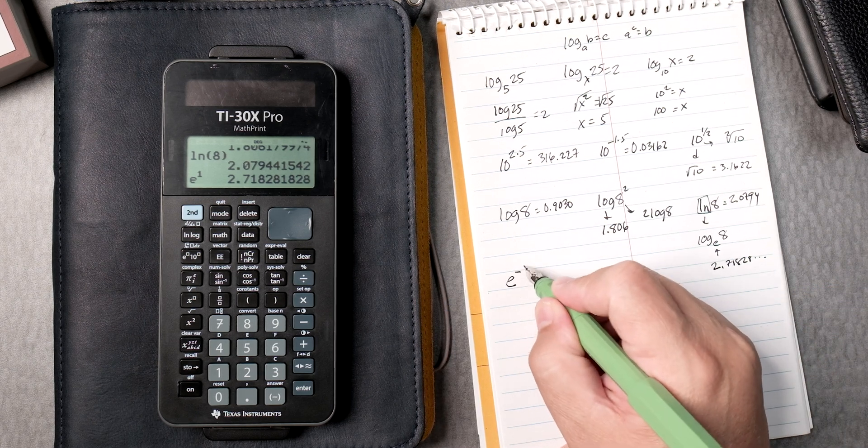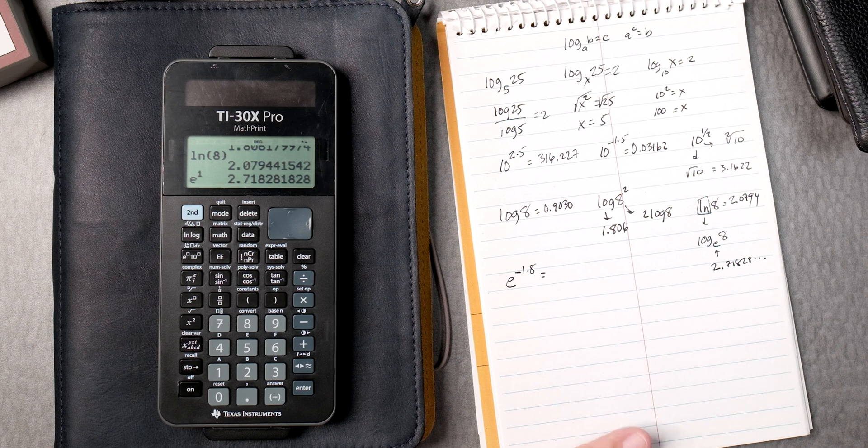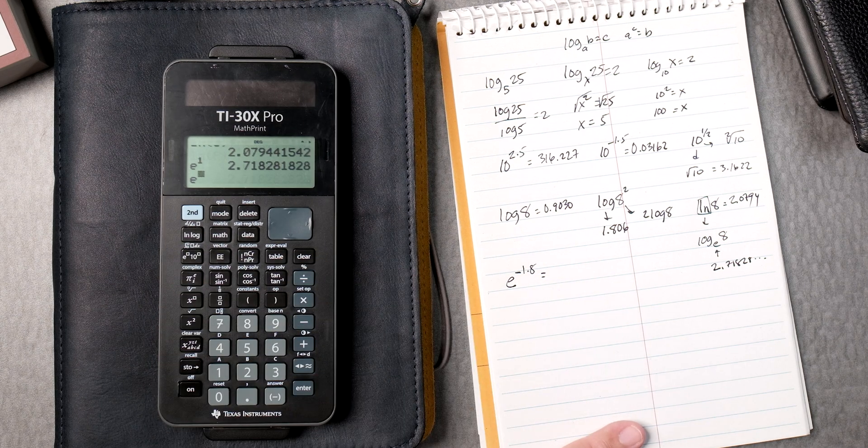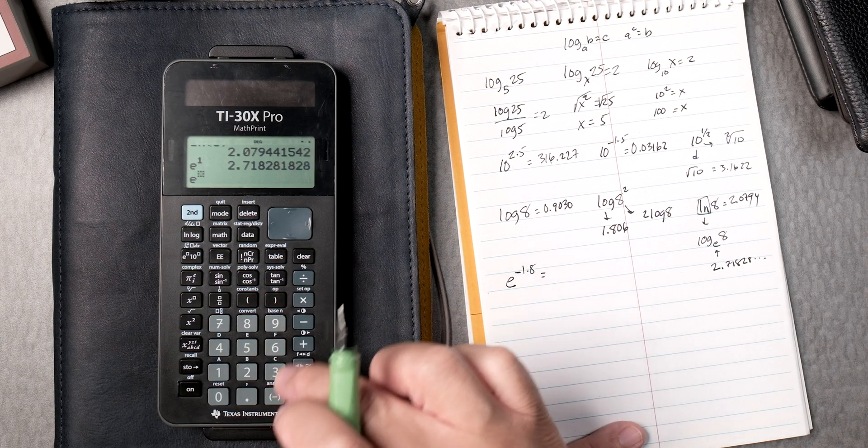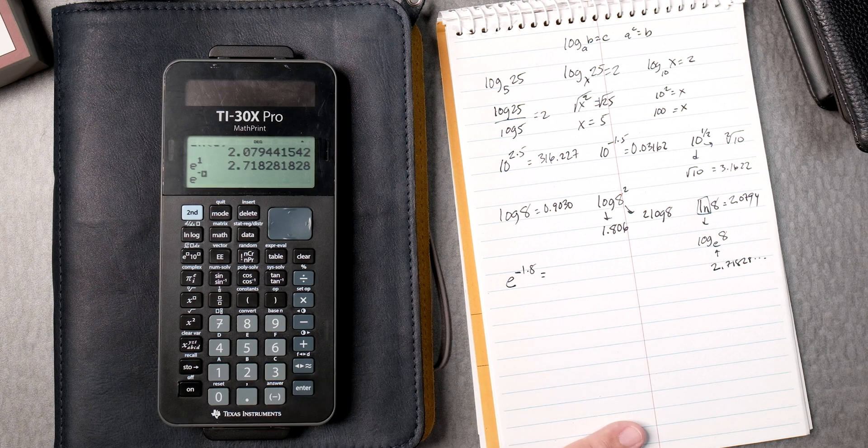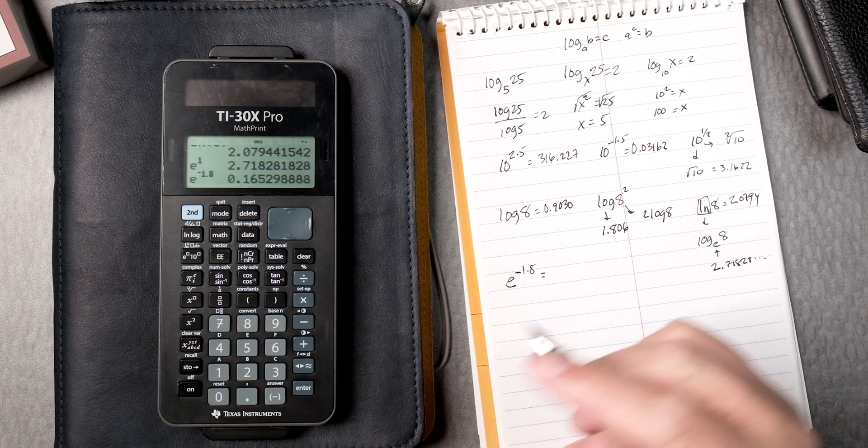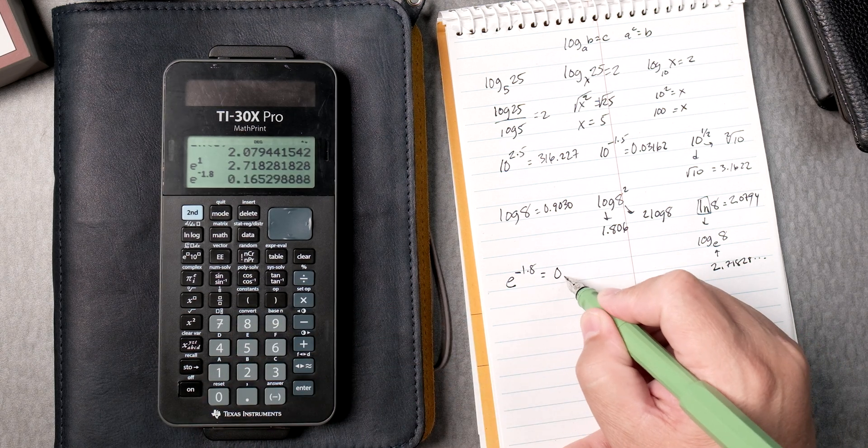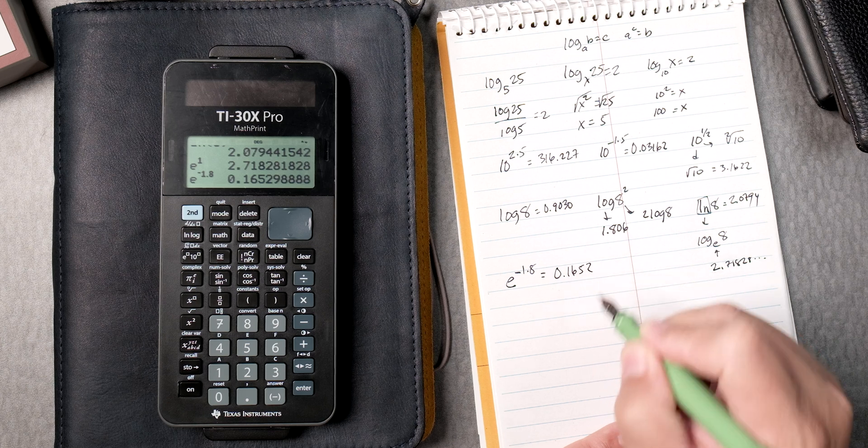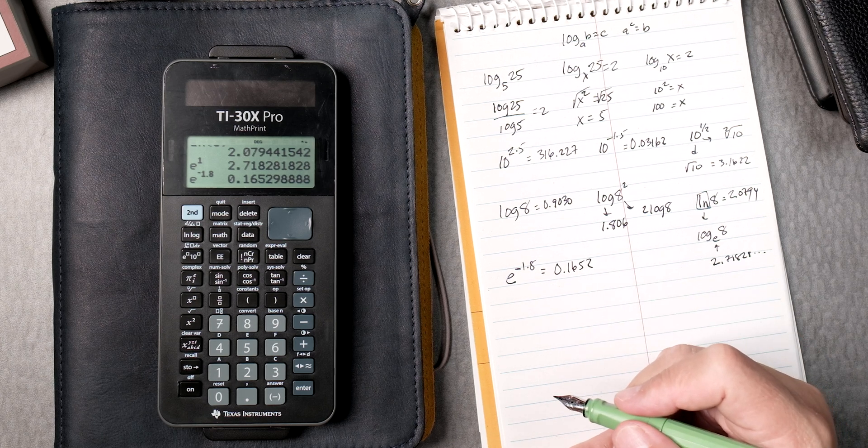So e to the negative 1.8, let's find out. So you press the e to the blank key, then negative, not subtract, 1.8, enter. It gives you 0.1652.